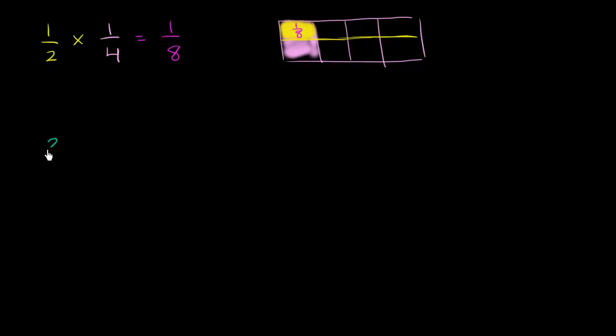Let's do another example, but now let's multiply two fractions that don't have 1's in the numerator. Let's multiply 2 thirds times 4 fifths. I encourage you to pause the video and try to represent 4 fifths of a whole, then represent 2 thirds of that 4 fifths, and see what fraction of the whole you actually have.